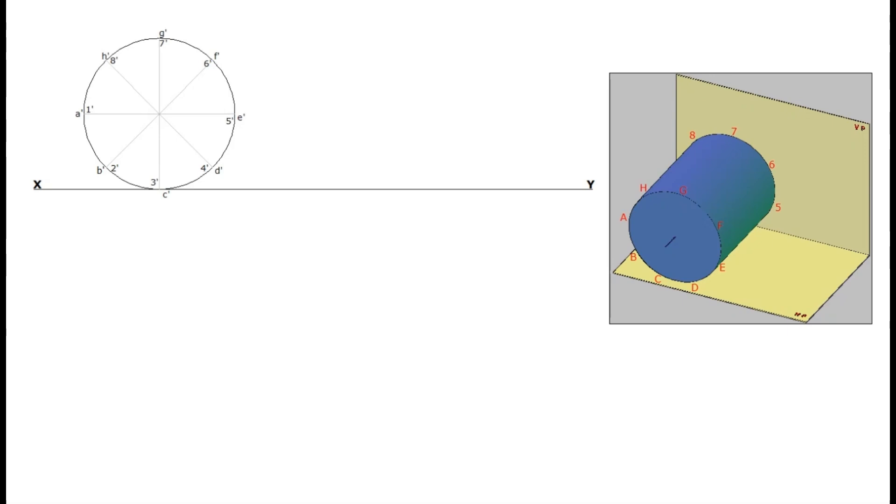Project the center of the cylinder as the axis of the top view. Mark the length of the cylinder 100mm on this axis. Project the extreme ends of the circle and draw the top view as a rectangle. The base side of the rectangle is equal to the diameter of the circle.